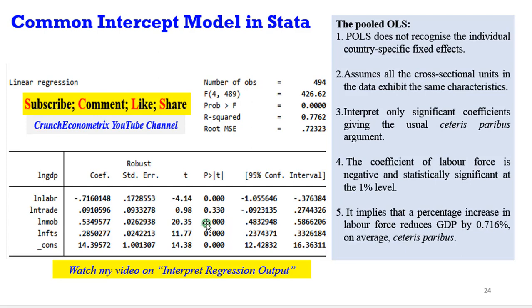To simplify explanation, I will only interpret labor. The coefficient of labor force is negative and significant statistically at the 1% level. It implies that a 1% increase in the labor force will reduce GDP by 0.716% on average, ceteris paribus. For more interpretation on regression outputs, I will advise you to watch my video. I have a detailed video on that. Please watch it, you'll find it very helpful.